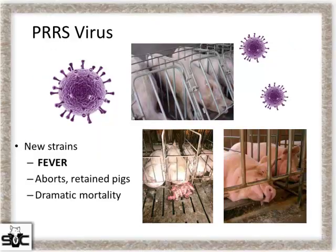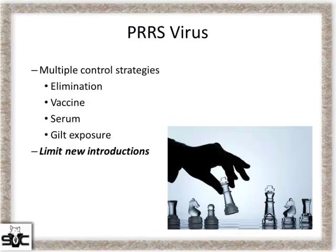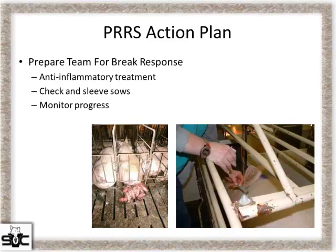Multiple control strategies exist for PRRS — elimination, vaccination, serum exposure, gilt acclimation — but the big one to me is doing everything we can from a biosecurity and testing standpoint to limit the introduction of that new virus, especially the strains of today that seem to cause that dramatic fever event and mortality that often feels like it gets out of control before we can get ahead of it.